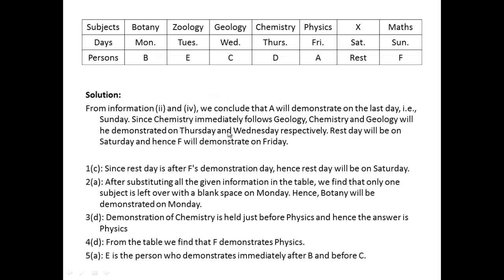This is how this type of question should be solved. We are given three basic things here: subjects, days, and persons. So you can make three rows or three columns to fill this table. The subjects are botany, zoology, geology, chemistry, physics, and maths. The days are Monday to Sunday.